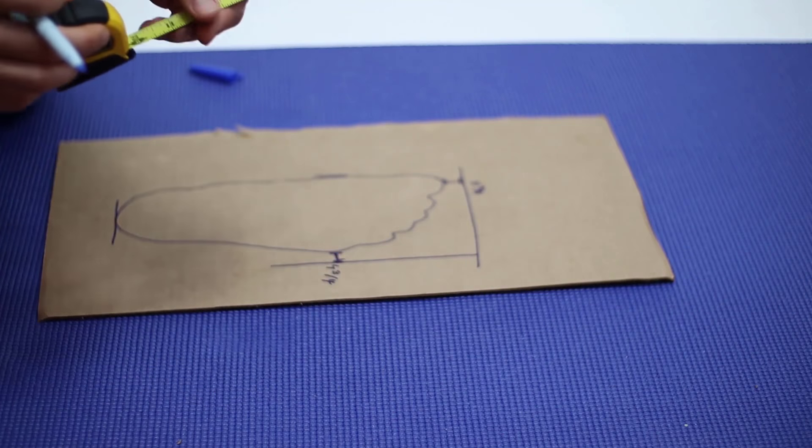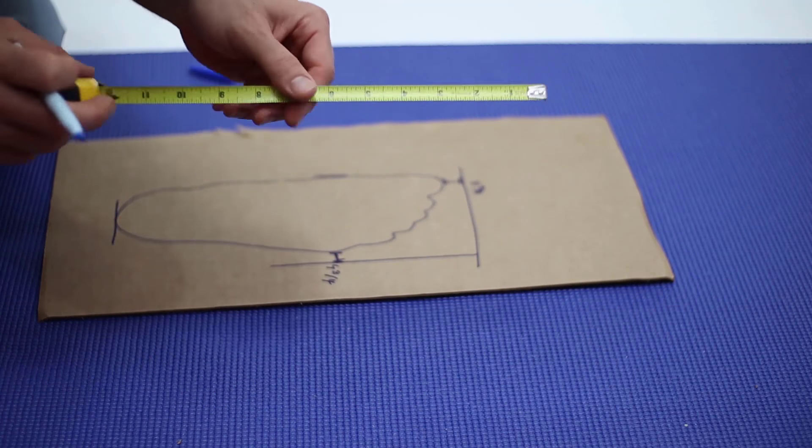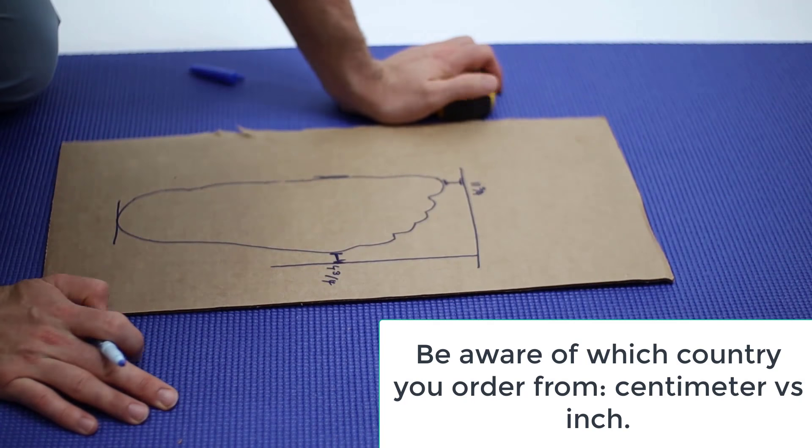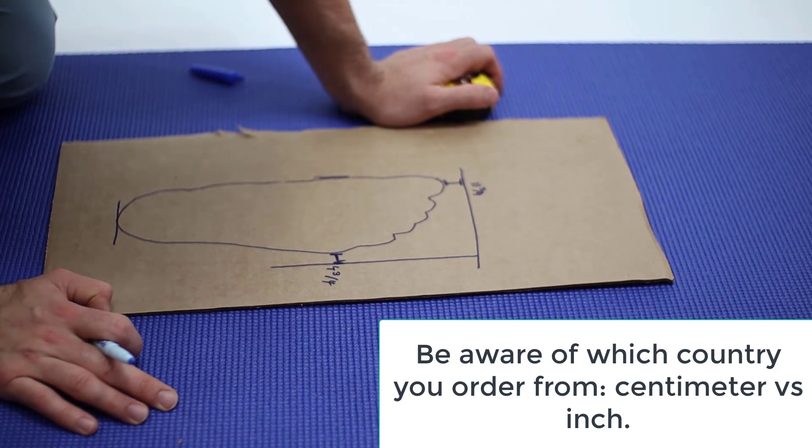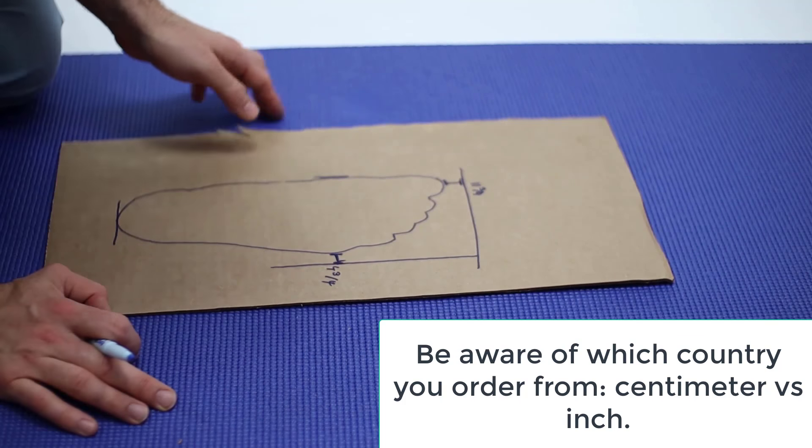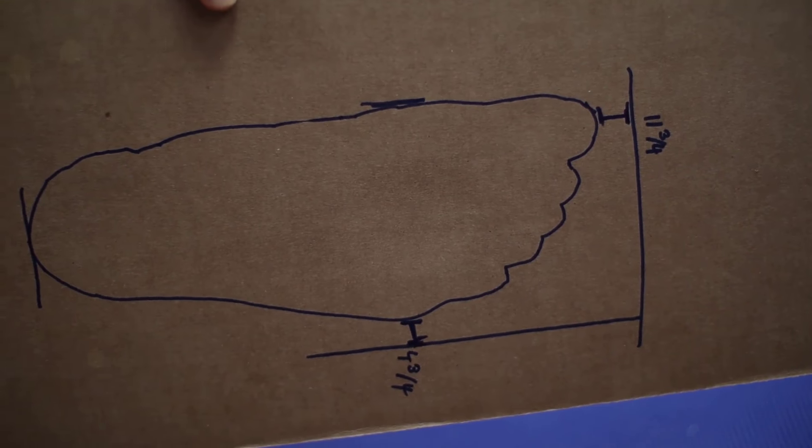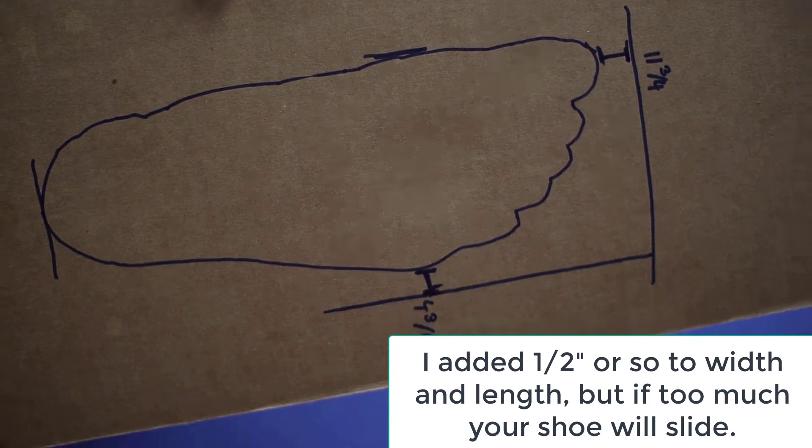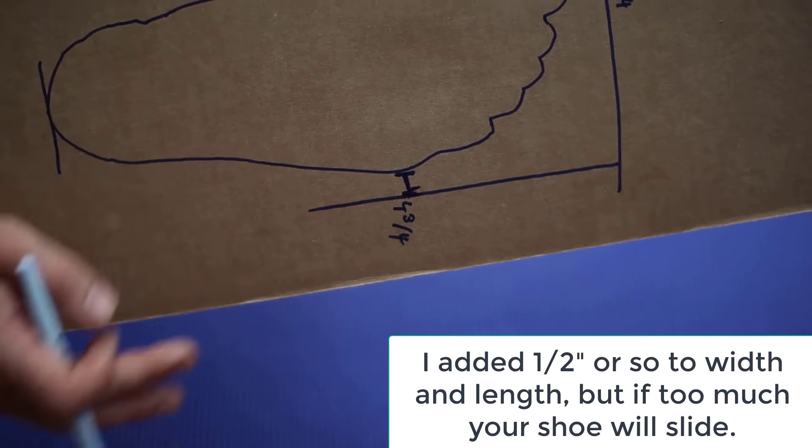We're in America, so I'm doing most of these videos for U.S. measurements. We're using inches, but if you're in Europe, use centimeters. Whichever country you're from, use it that way. As you can see right there, I added a little bit to the big toe and to the fifth toe bump, the tailor's bunion bump.